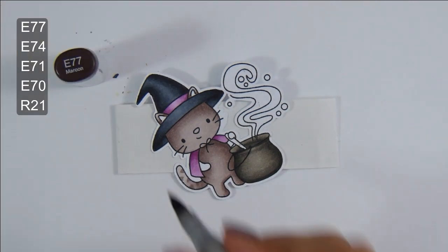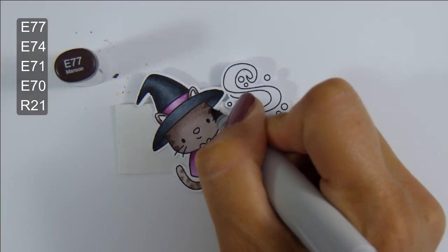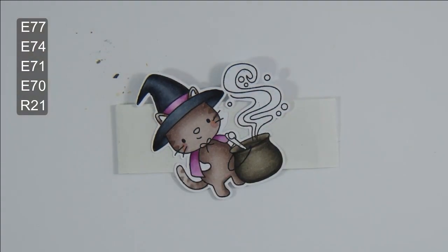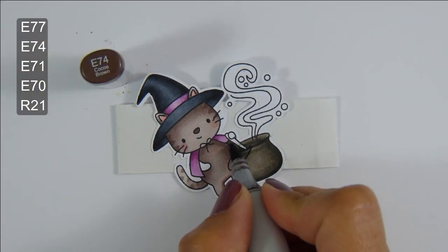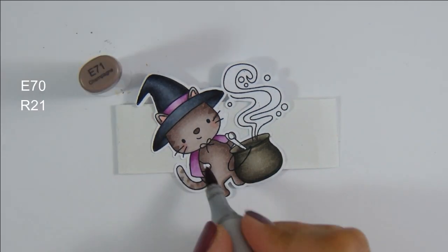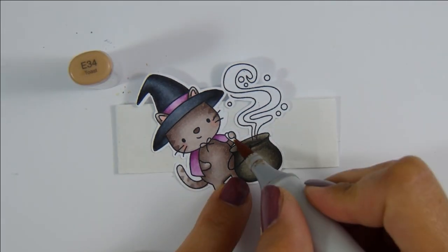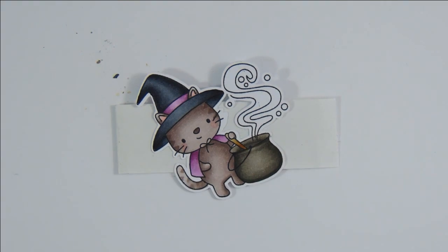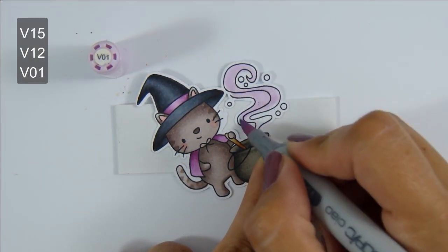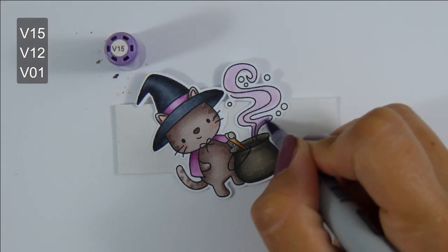I did use this darkest of E70s to add the little triangles to the tail and the sides of the face. I think that really finishes off his face really nicely and adds a little bit of detail. Coloring his spoon with some E30s and then coloring in these vapors with some V markers.